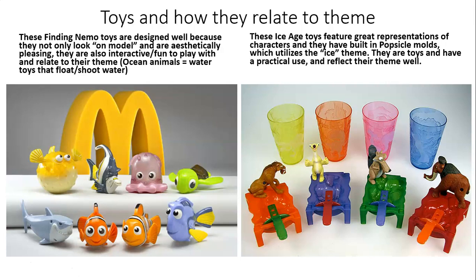In this assignment, you're going to be asked to choose a theme and then design a toy based on that theme. One of the things you need to consider when you're designing is who is your audience. Here are a couple of examples I want to talk about. On the left you've got Finding Nemo toys, on the right you have toys from the movie Ice Age. One thing about design to keep in mind is that if something is designed really well, you often don't notice it, because the design is so well integrated. It's usually only when something is poorly designed that attention is drawn to how it's made.